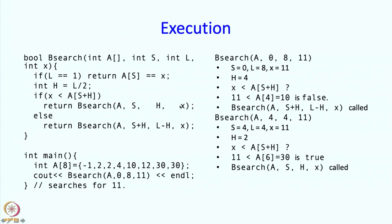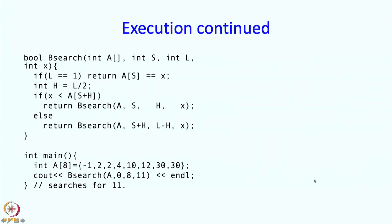So A, S, H gets called. What are these values? These values are 4, S is 4 over here, H is 2 and X is 11. So the call that we are going to make is A, 4, 2, 11. So let us examine this call A 4 2 11.